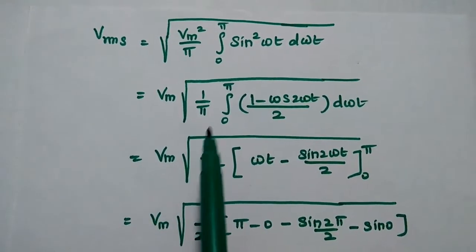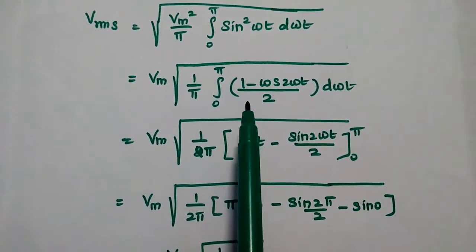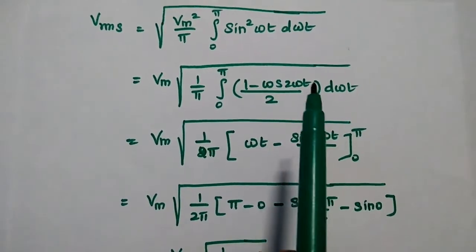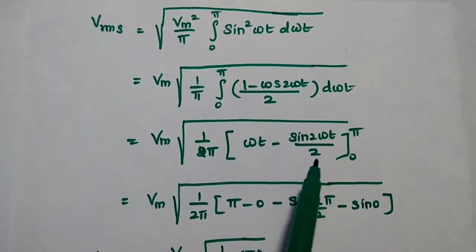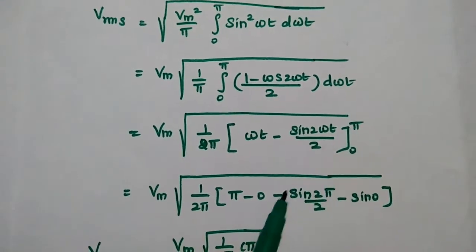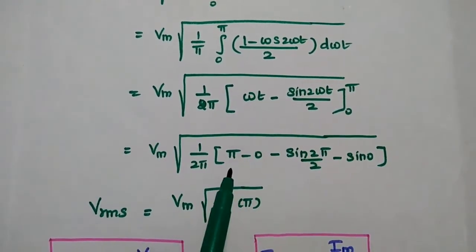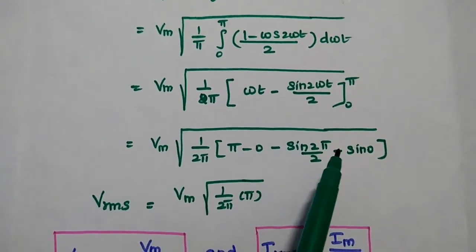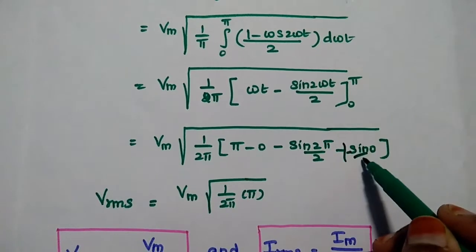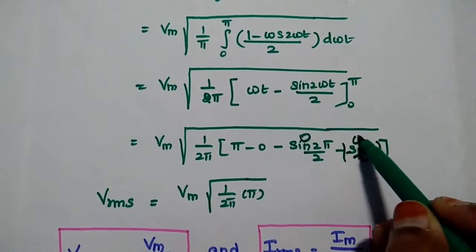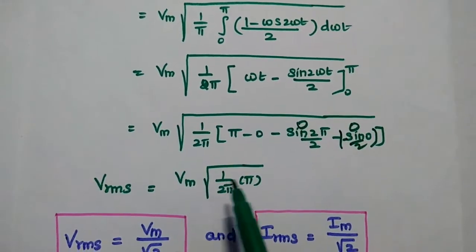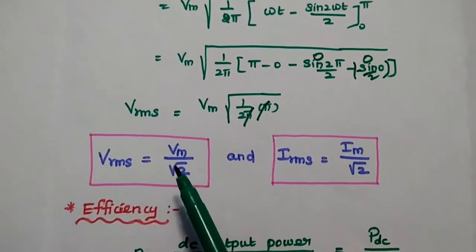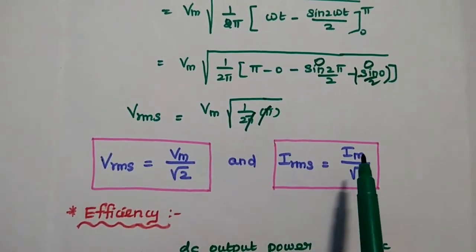The factor of 2 is taken outside, giving Vm × square root of (1/2π) × integral from 0 to π of (1 − cos 2ωt) dωt. Integrating: [ωt − sin(2ωt)/2] from 0 to π. Substituting limits: [π − sin(2π)/2] − [0 − sin(0)/2]. Since sin(2π) = 0 and sin(0) = 0, we get (1/2π) × π, simplifying to Vrms = Vm/√2. Similarly, Irms = Im/√2. These values are very important for finding efficiency and ripple factor.